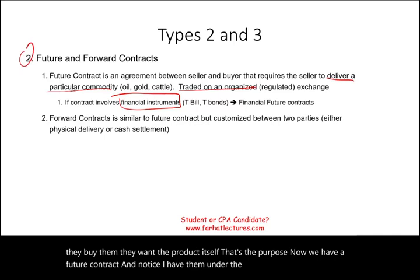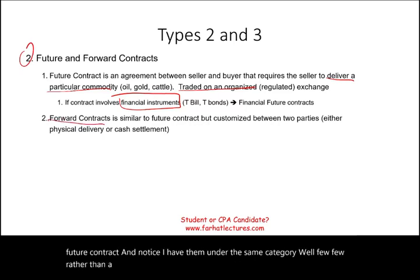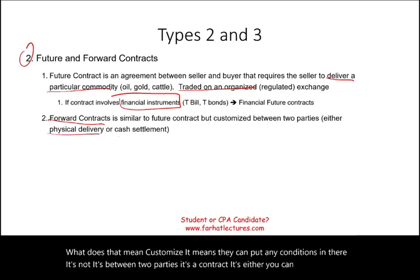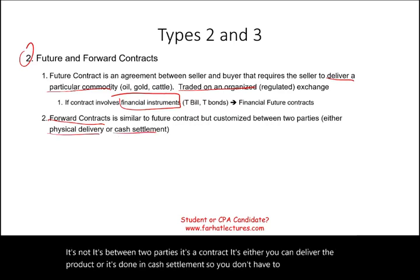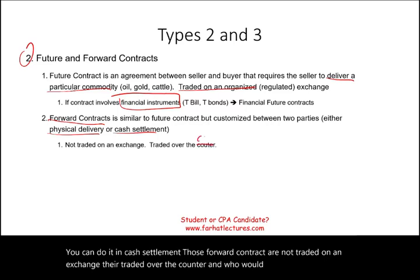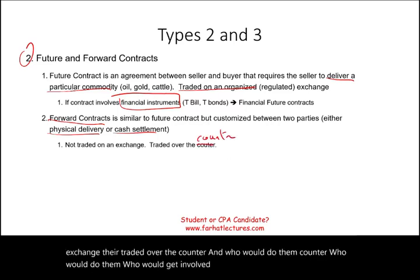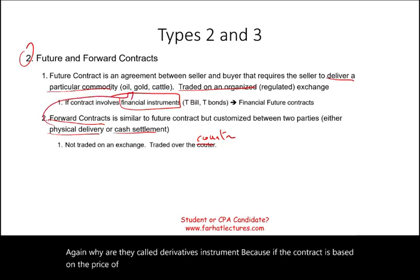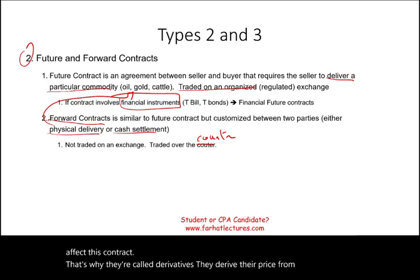A forward contract is similar to a future contract but is customized between two parties. The terms are negotiated directly — delivery can be physical or settled in cash. Forward contracts are not traded on an exchange; they're traded over the counter. They're called derivatives because if the contract is based on the price of gold, for example, and gold's price goes up or down, it directly affects the contract's value.